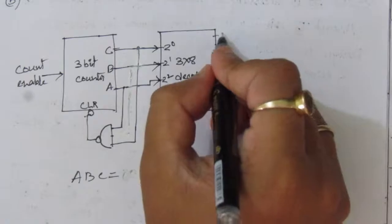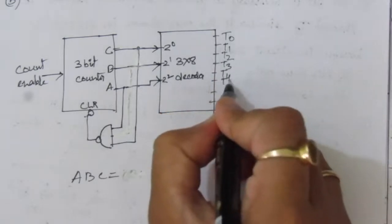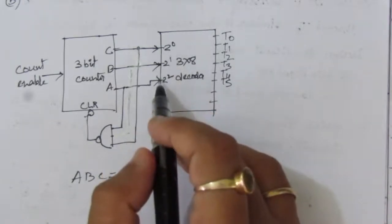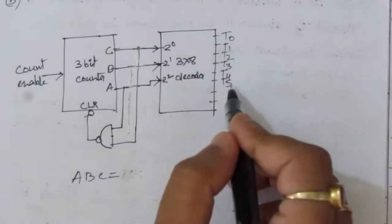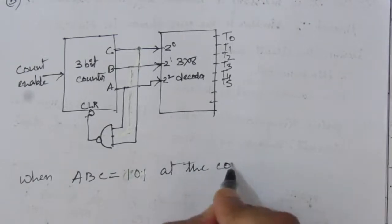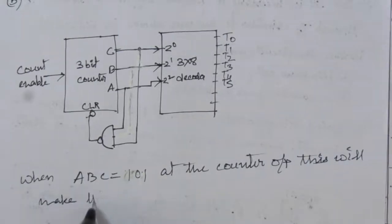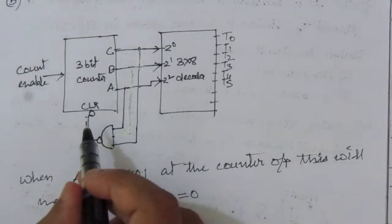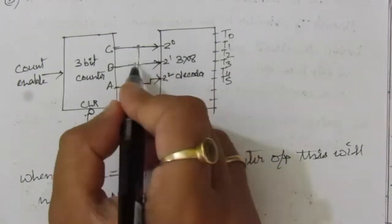We need to go from 0,0,0 up to 1,0,1 (which is 5), giving 6 sequences from 0 to 5. The outputs T0 through T5 are needed. The last two outputs of the 3x8 decoder (for 6 and 7) are not used. Using a NAND gate, when ABC equals 1,0,1 at the counter output, the NAND output becomes 0, providing an active-low signal.